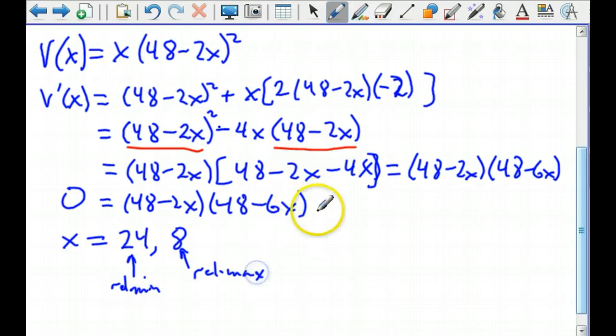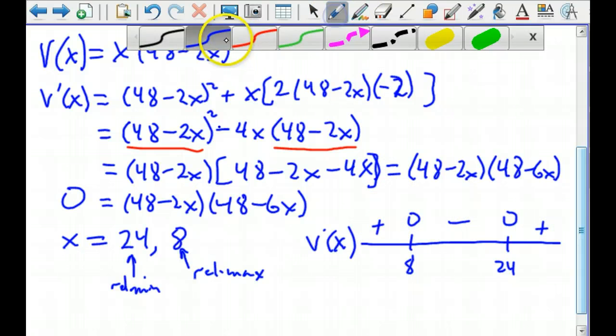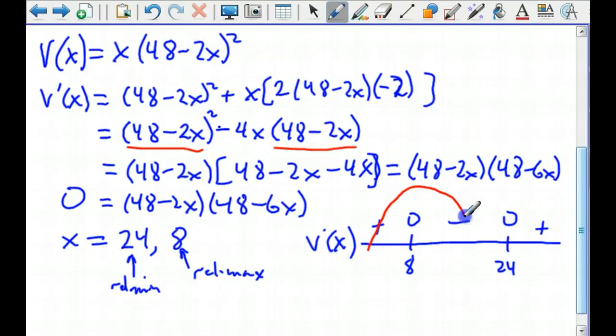How can we be sure of that? Remember you can do a sign chart. So if I do a sign chart for v prime of x, and I know that I have the derivative equal to 0 at 8 and 24, if I pick a number less than 8 and put it in here, say 0 even, I'm going to get a positive. If I pick a number between 8 and 24, like 10, I'm going to get a positive times a negative, which is negative, and then out here I'll get a positive. So our volume function is doing something like this. It's going up and down like that. That would give us our maximum volume when we cut 8 inches off of each corner.